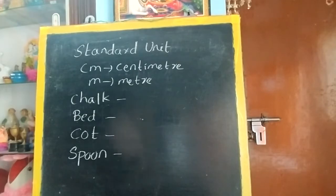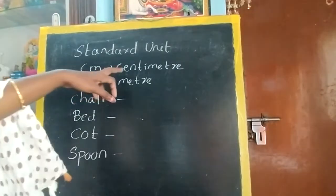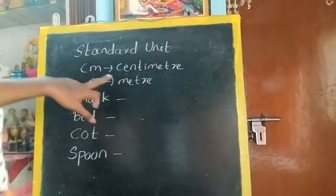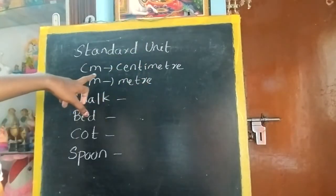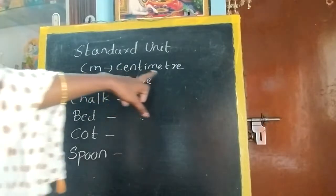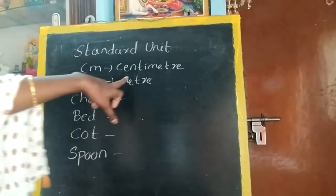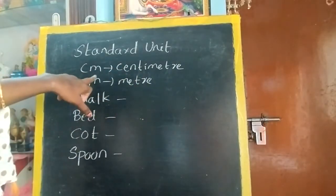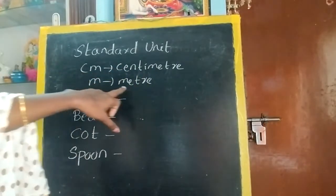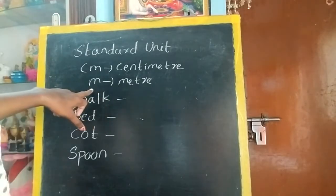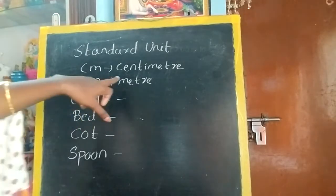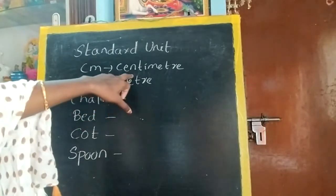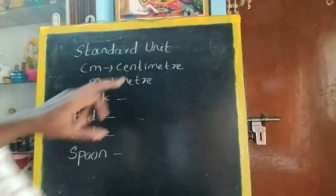See, this is the spelling for centimeter, but you have to write only cm — you will not write the full abbreviation, you have to write cm. This is a unit of length. Meter means you write only m. The spelling is m-e-t-r-e.